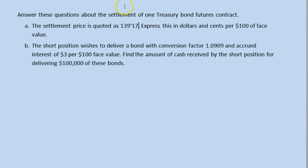So the quote is 139-17. Sometimes you'll see it written as 139-17, and the key to this quote is that Treasury bond futures are quoted in dollars and 32nds of a dollar. So 139-17 means 139 and 17/32 per $100 of face value.